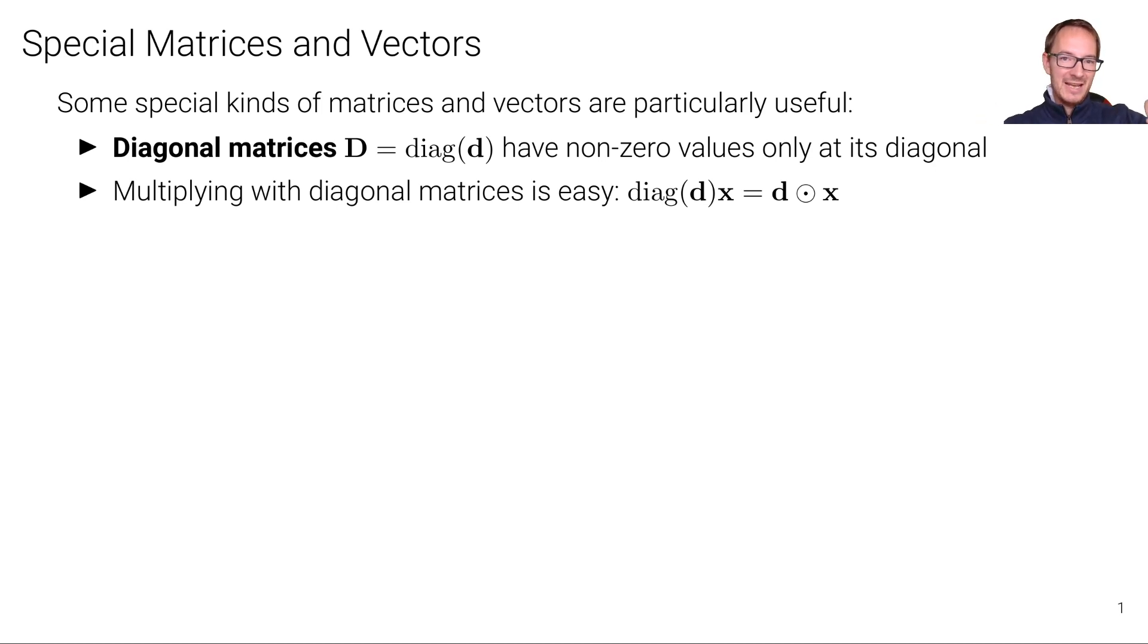We scale each element with each of these elements on the diagonal respectively. And we can write this also using the element-wise product, the Hadamard product between the vector d and x.